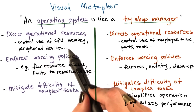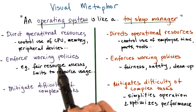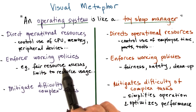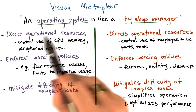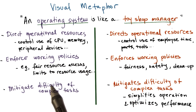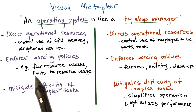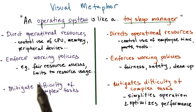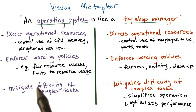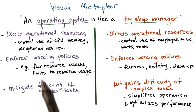Along those lines, operating systems also enforce some policies. This can include policies regarding how these resources are used — for instance, to control fair access to shared resources, or even to impose certain limits on the maximum amount of a certain resource that a particular application or process can use.